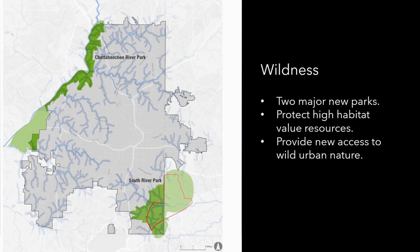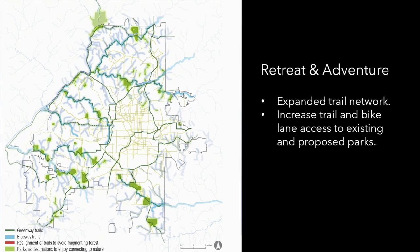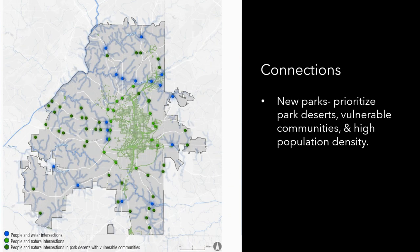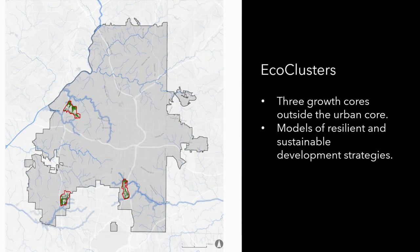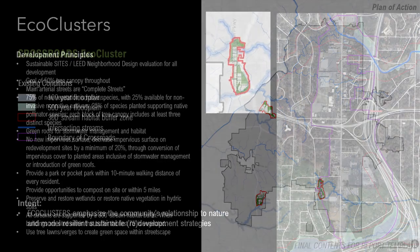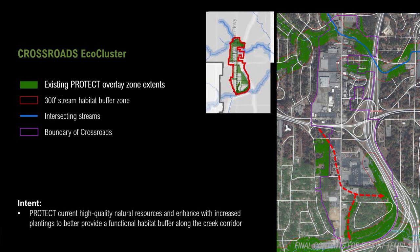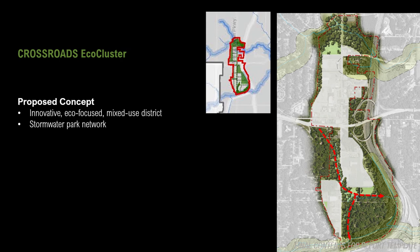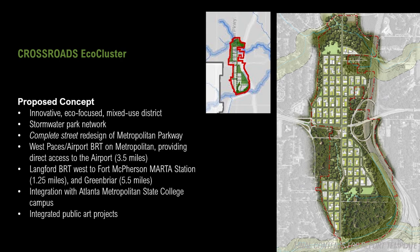Recommendations include two large generational-scale major parks to protect resources and provide access to wild urban nature, an expanded trail network with increased bike lane access, a network of new parks prioritizing park deserts and vulnerable high-density communities, and eco clusters — three growth areas outside the urban core but connected to public transportation that could serve as models for sustainable and regenerative development. We drafted principles for moving these forward and illustrated how the protection and restoration network could shape what an eco cluster might look like.